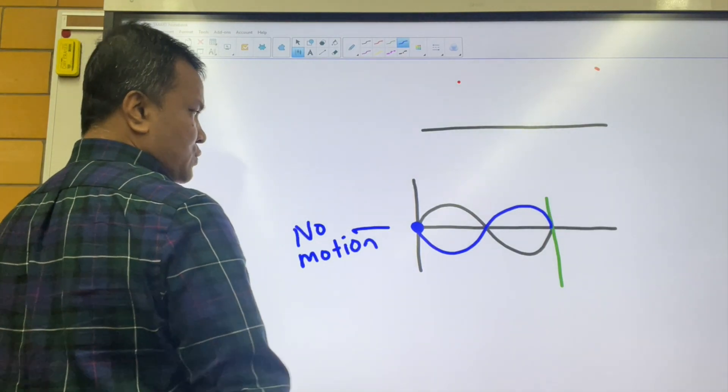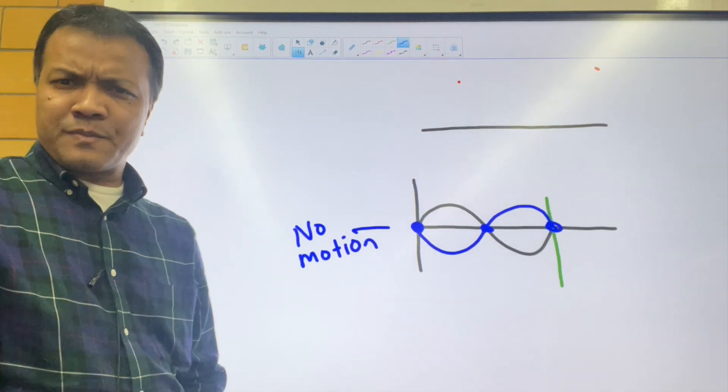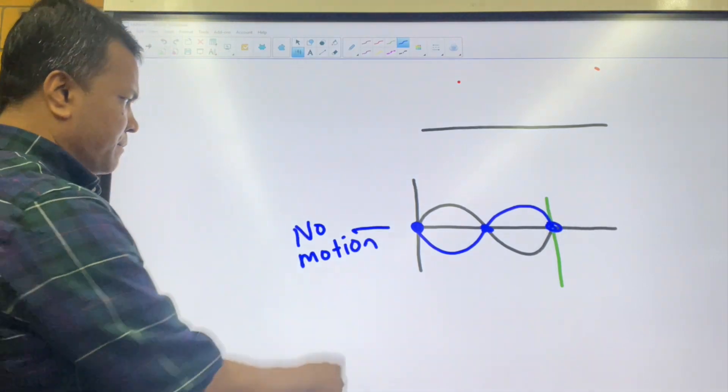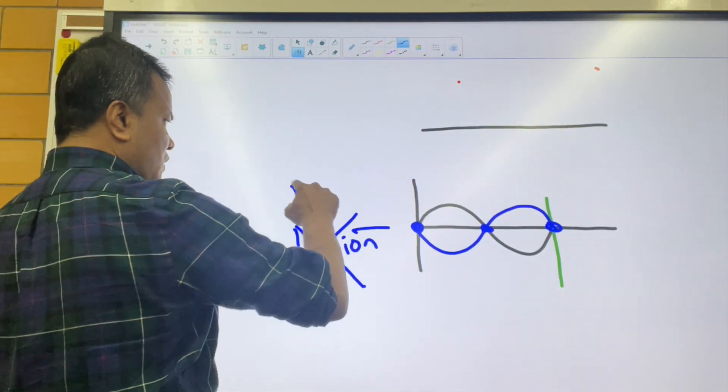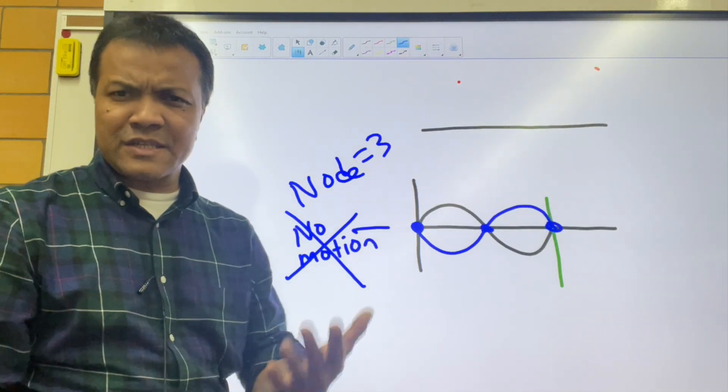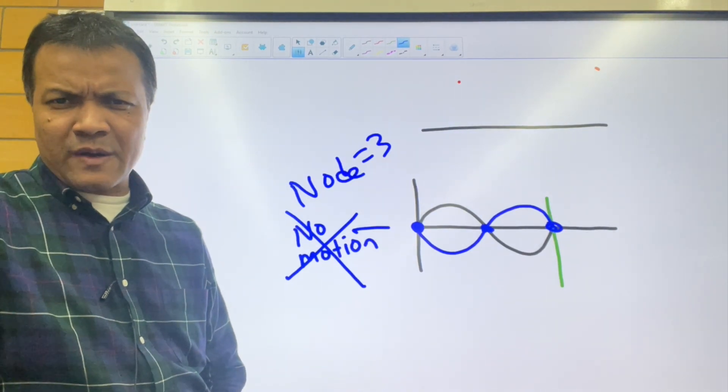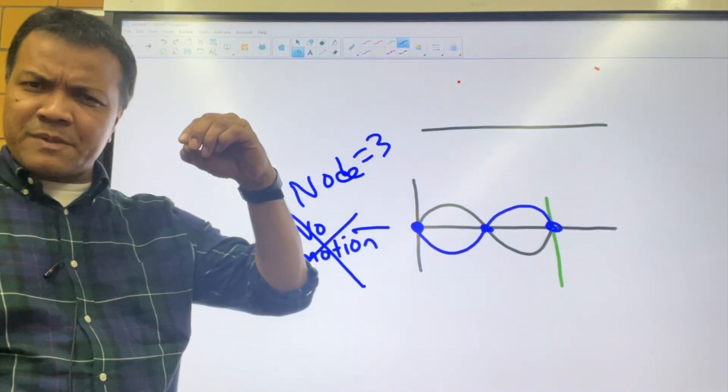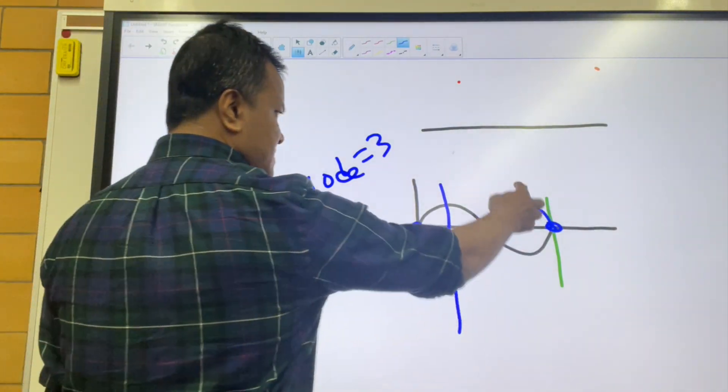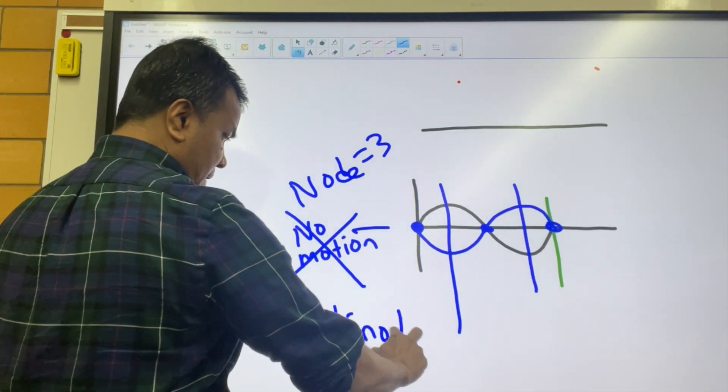Node is the place where no motion. How many no motions we have? One, two, and three. No motion doesn't sound like music, so let's give it a name. I'm going to call it node. How many nodes? Three nodes. How many anti-nodes? Anti-node is always one less than the node. The definition of anti-node is where the maximum displacement takes place. This is maximum displacement and this is maximum displacement.